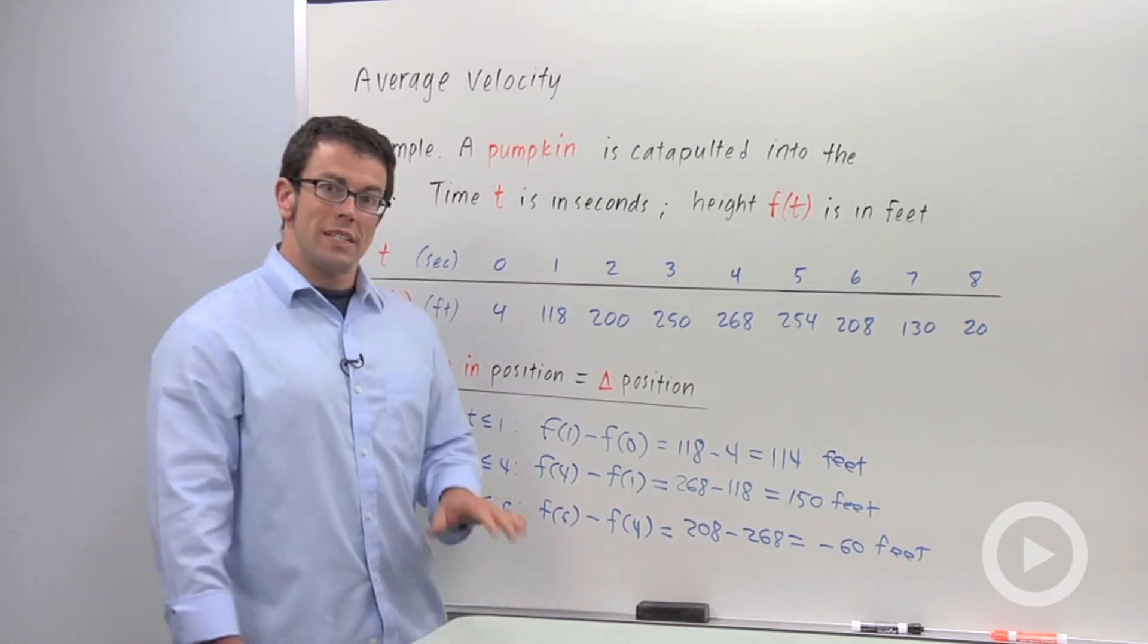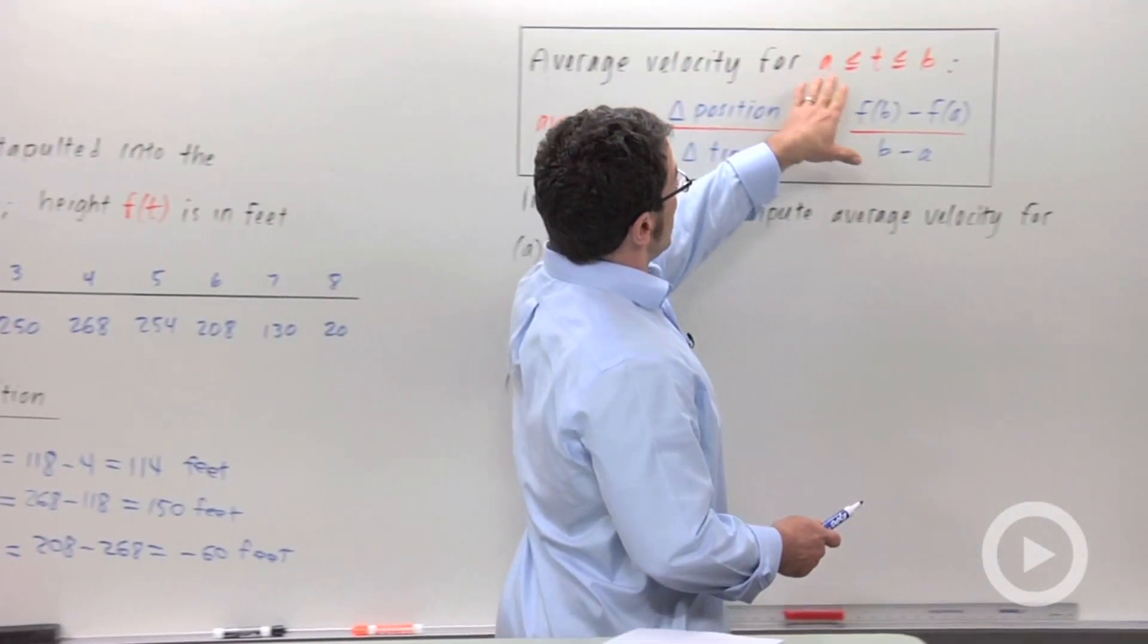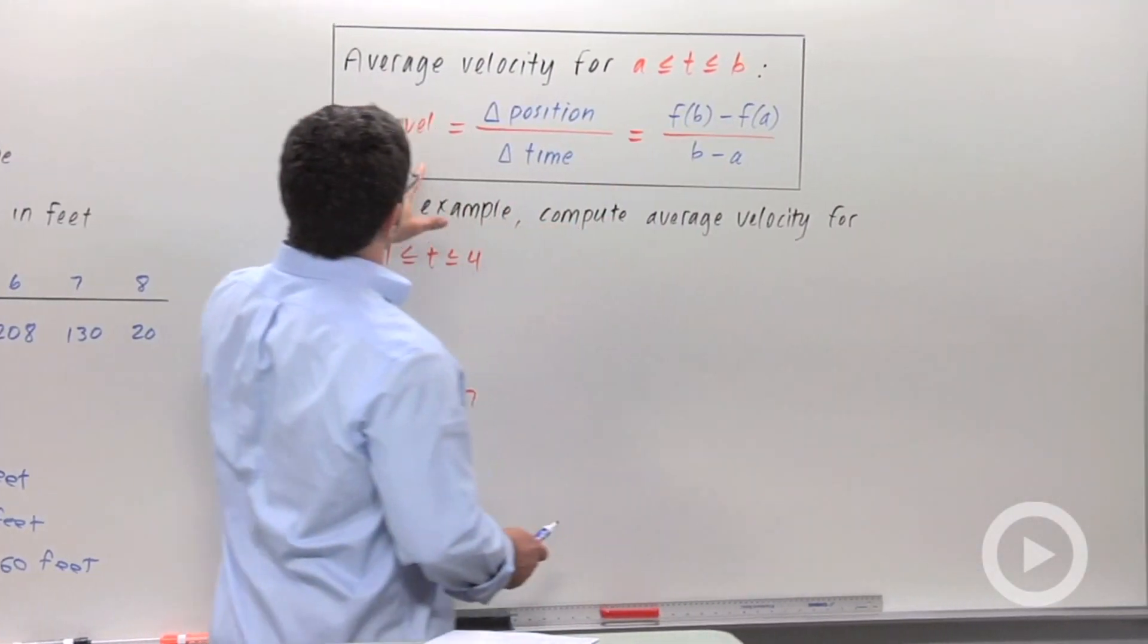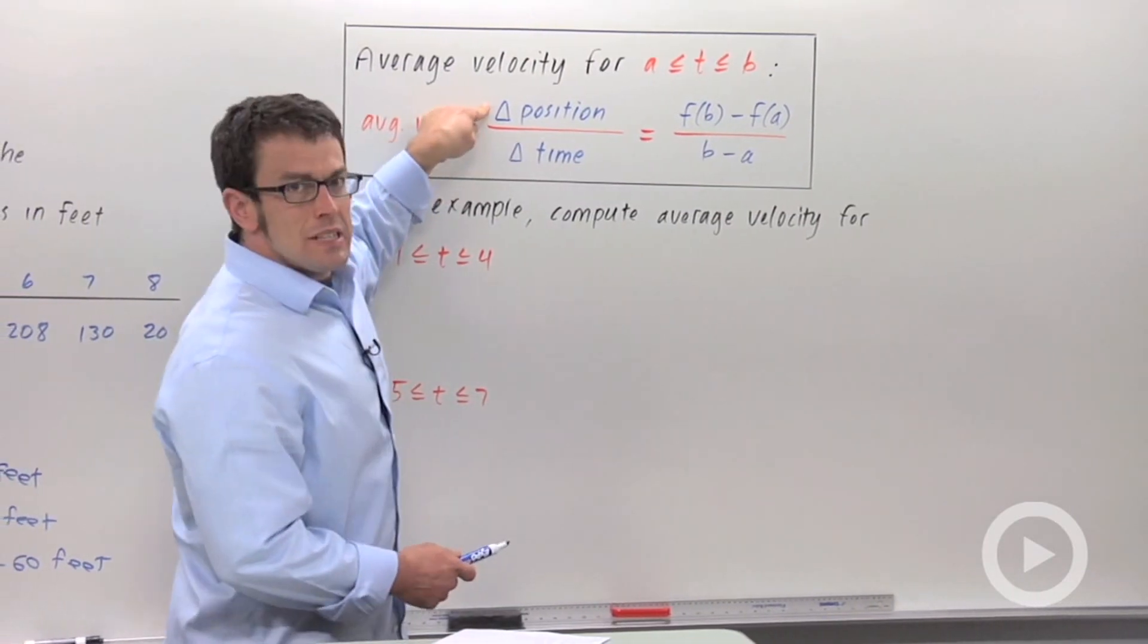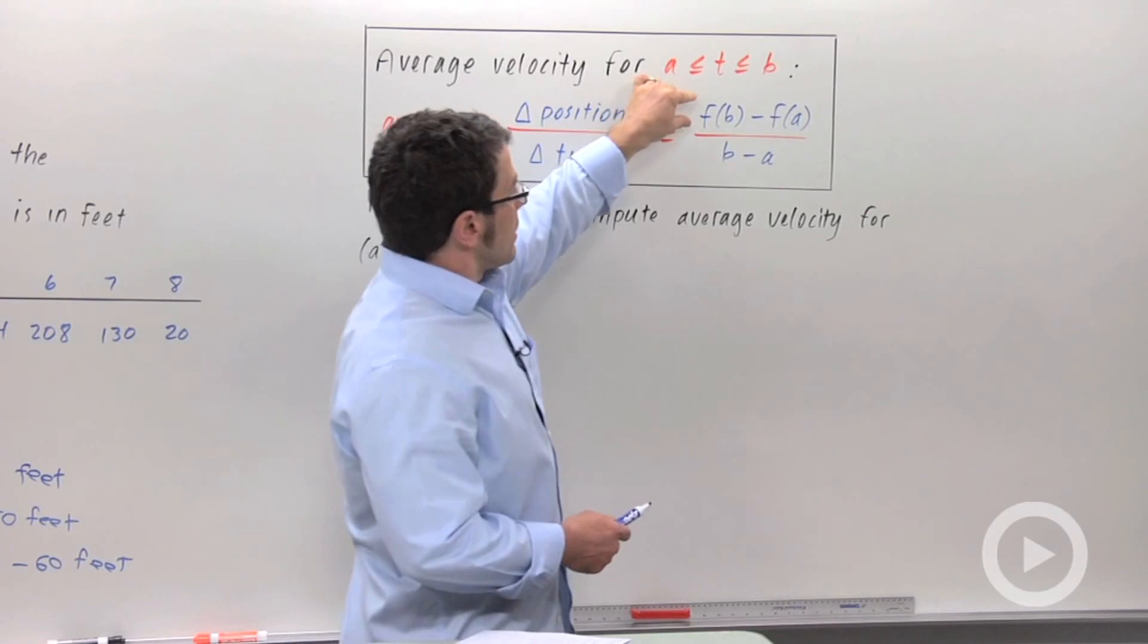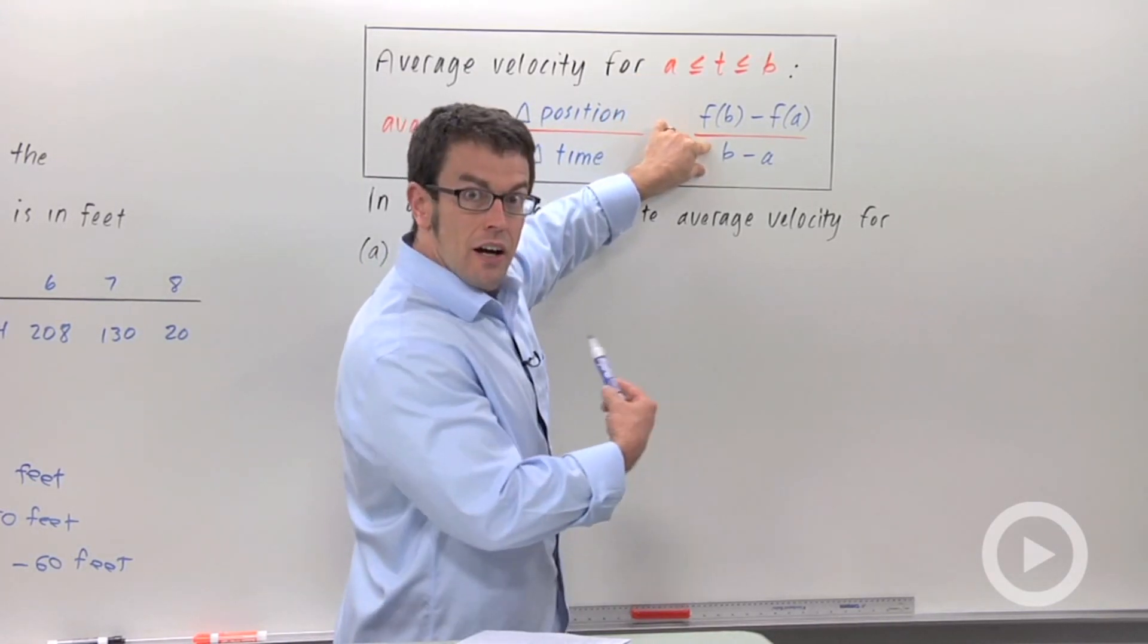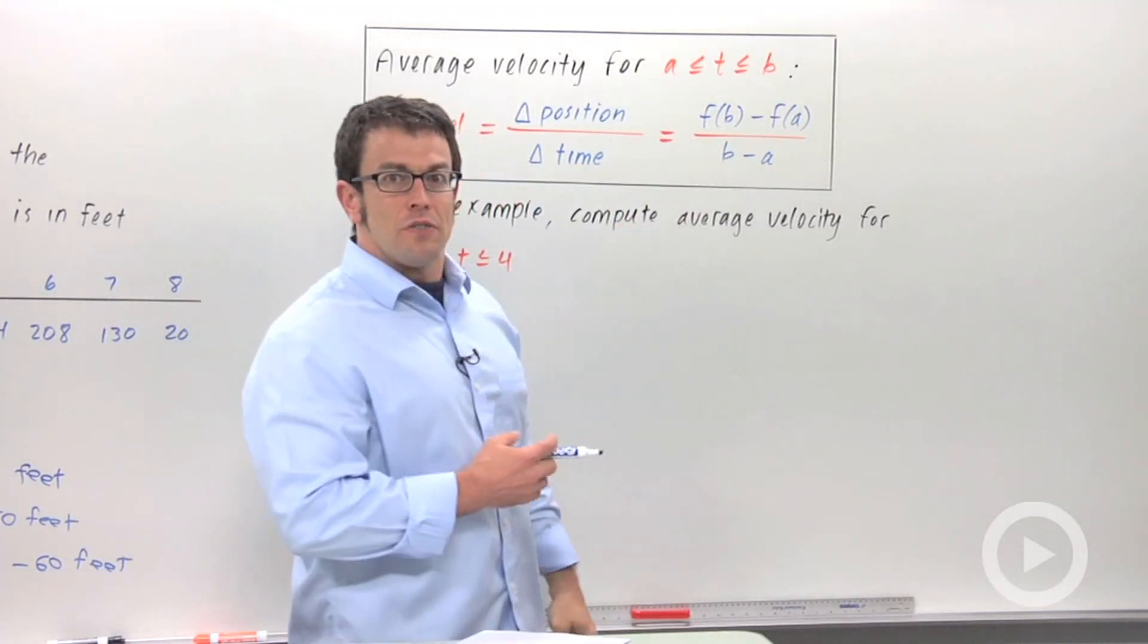So what does this have to do with average velocity? Average velocity over an interval from a to b is defined as the change in position divided by the change in time. And so what we were calculating just now were changes in position. If you divide that by the change in time, the length of the interval, you get the average velocity.